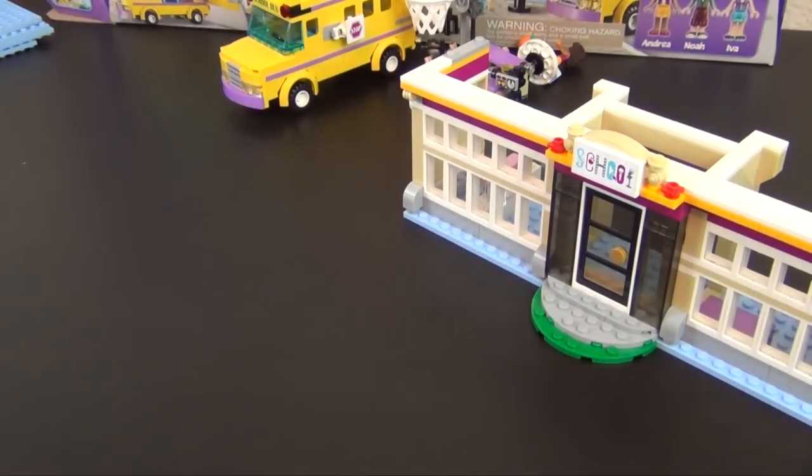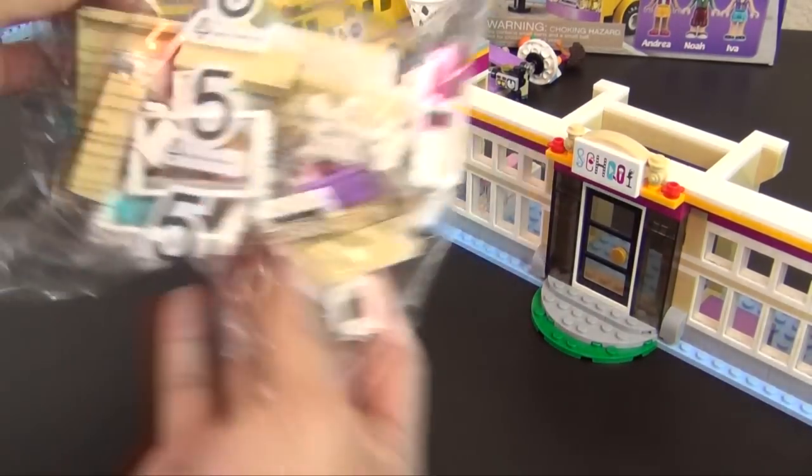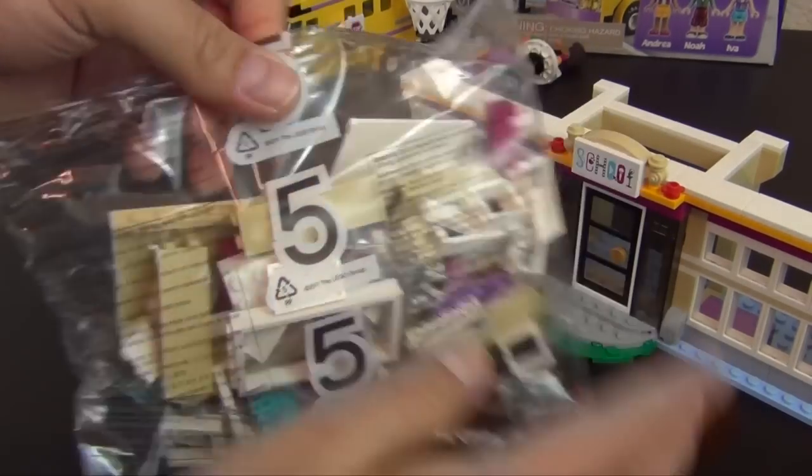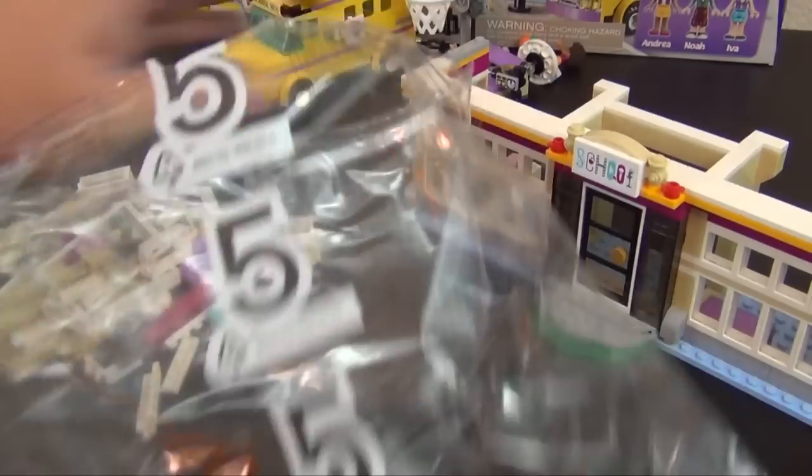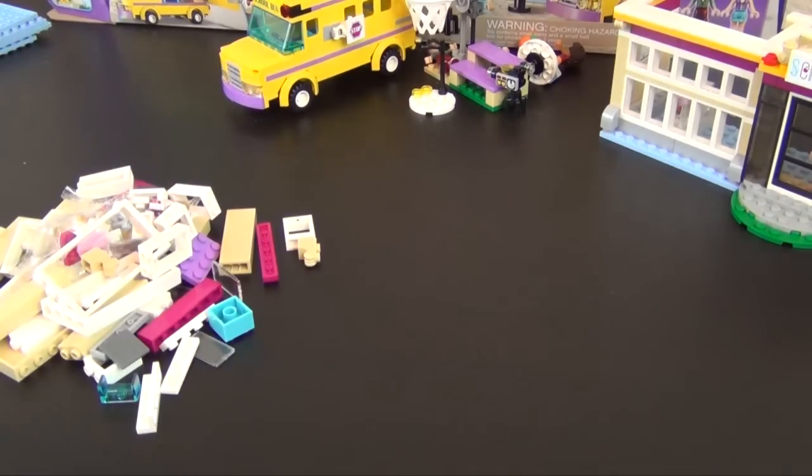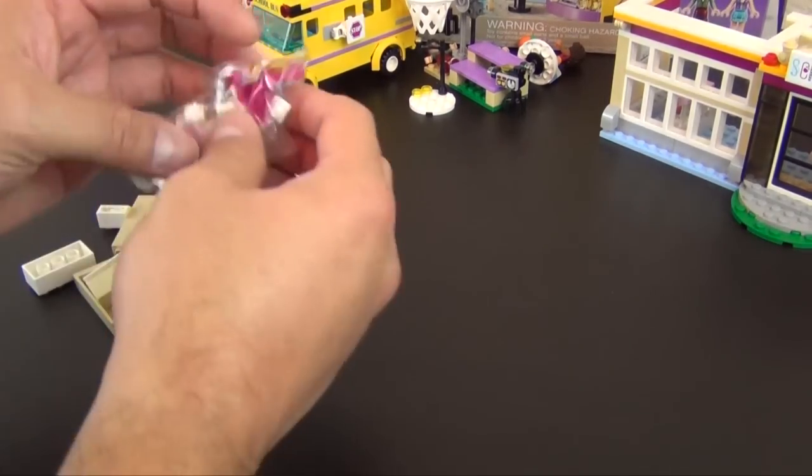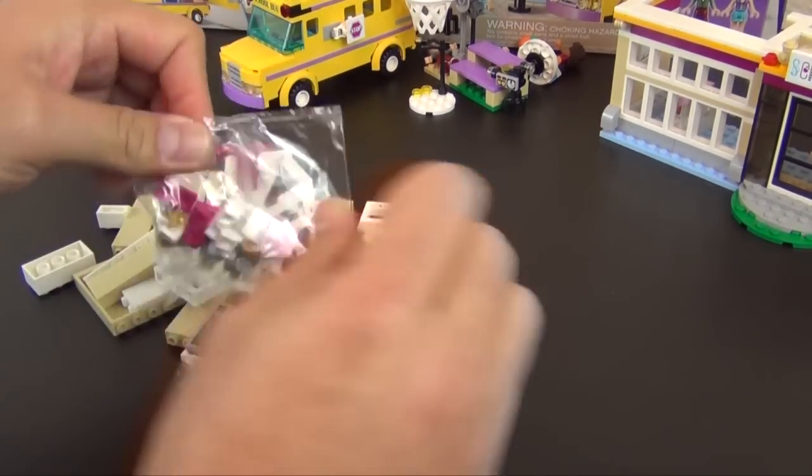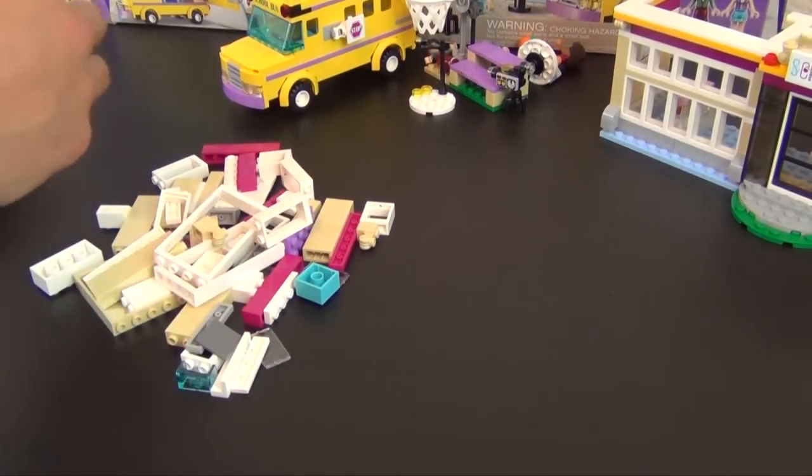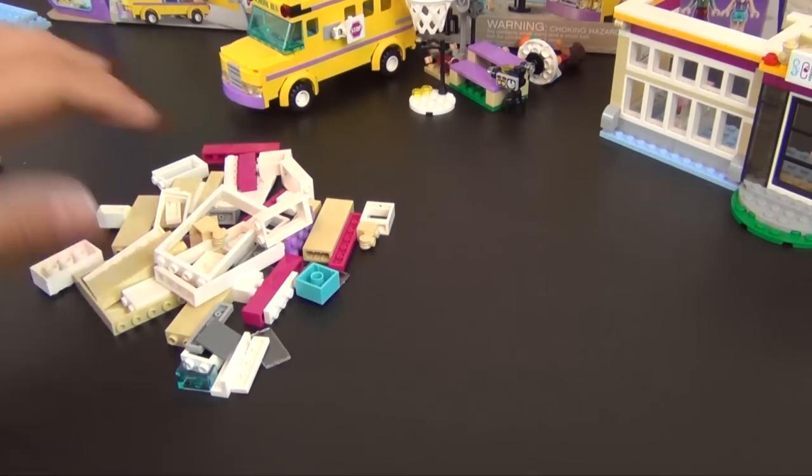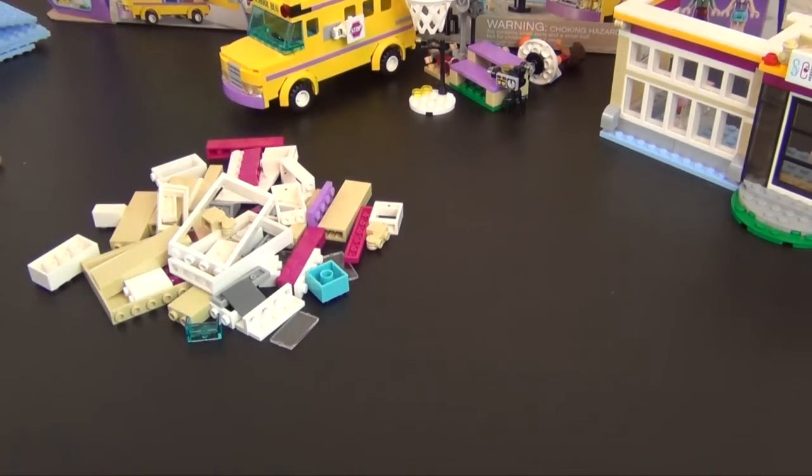We're moving on to bag number five. The school's off to the side because we basically finished the first floor in part one, so we've got a couple floors on the top that we're gonna build now.